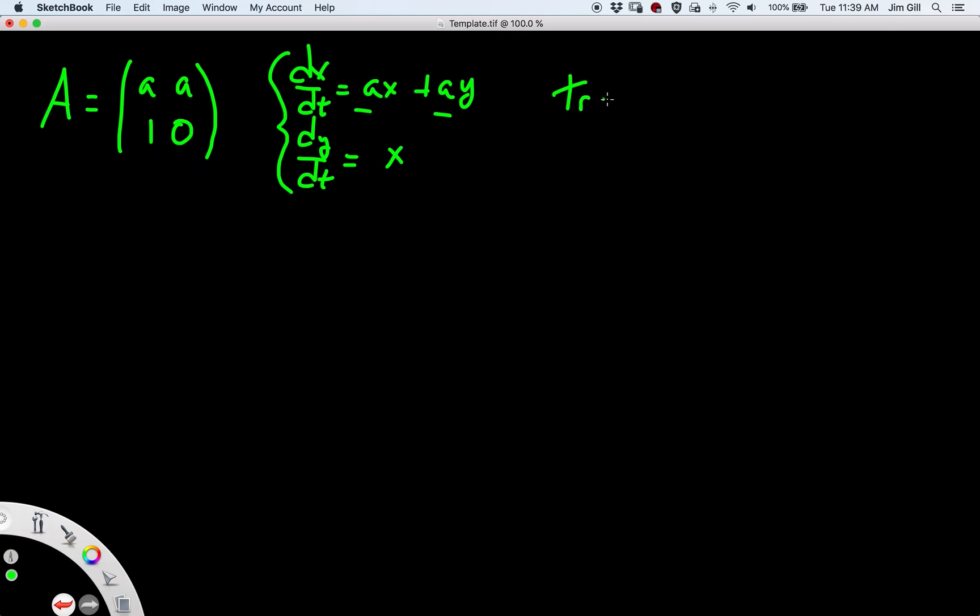The trace of the matrix A is the sum of the diagonal A and 0. So the trace of A is just A. The determinant of A is equal to A times 0, which is 0, minus 1 times A. So it's negative A. So here the trace T is A, and the determinant D is minus A.